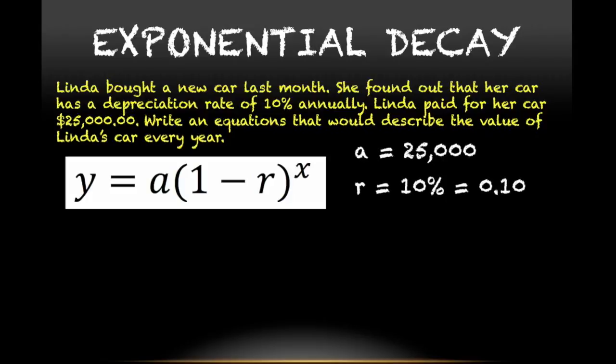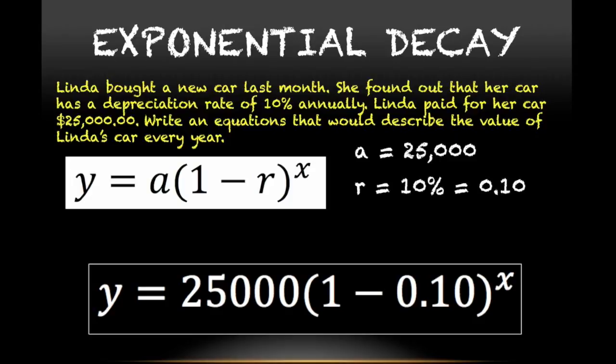My a value in this case will be $25,000, representing the amount that Linda paid for the car or the initial value of the car. R is represented by 10%, the decay rate. But we will change it as a decimal 0.10. Once I have my a value and my r value, this is enough for me to write my equation. In this case, y equals 25,000 times 1 minus 0.10 to the x value.